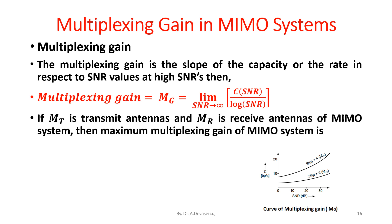If M_T is the number of transmit antennas and M_R is the number of receive antennas of the MIMO system, then the maximum multiplexing gain of the MIMO system is M_G = min(M_T, M_R).